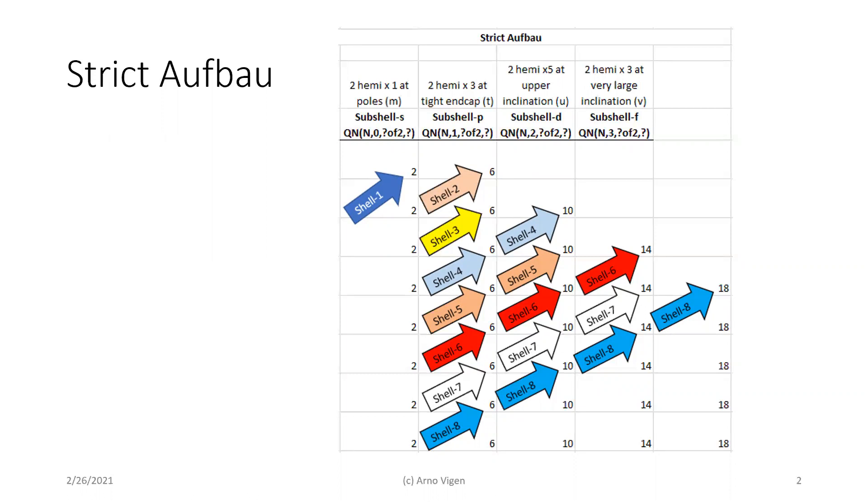And filled in these diagonal rows, the first shell being 2, the second shell being 2, then 6, the third shell being 2, then 6, the third shell being 2, strangely enough, then 10, then 6. 2, 10, 6, to 14, 10, 6, and so on.